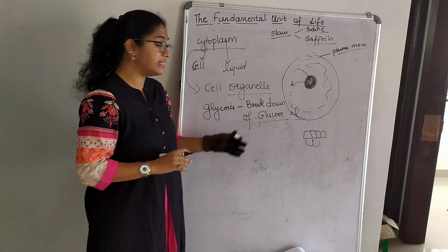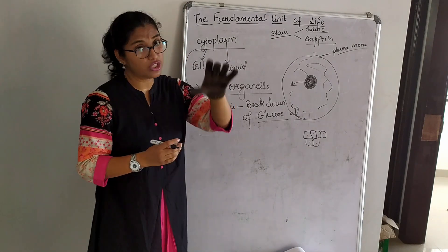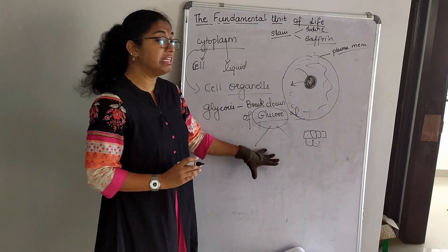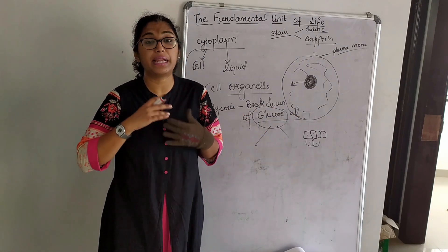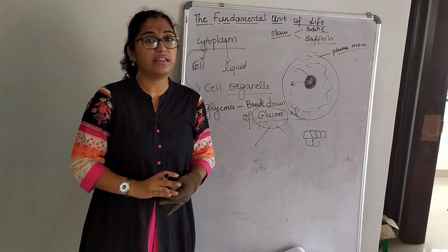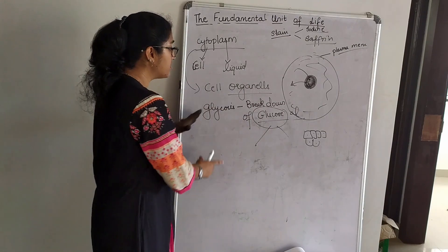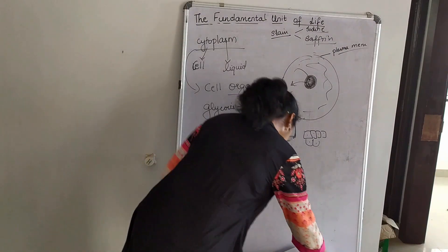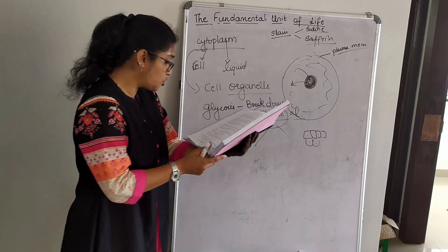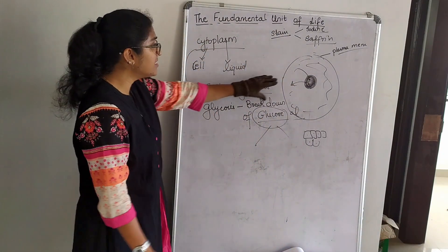The actual breakdown of glucose is a detailed process studied in class 10. Here we only need to understand that cytoplasm helps in the metabolic pathway of glycolysis — the chemical reactions that break down food. Cytoplasm also stores vital chemicals such as amino acids, glucose, ions, and more.